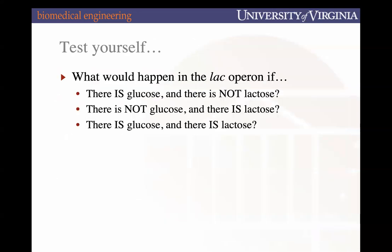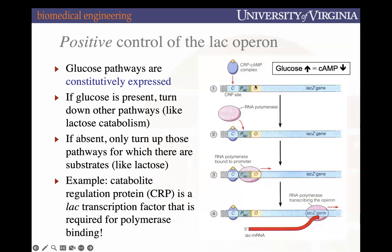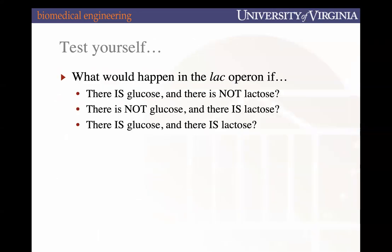Key to remember: the repressor binding the operator and lactose's inhibition of that repressor work together with glucose concentration signals via cyclic AMP and CRP. Both the repressor and the CRP-cyclic AMP complex must be considered together. This slide can be used to test yourself on the various combinations of lactose and glucose concentrations and their effects on lac operon expression.